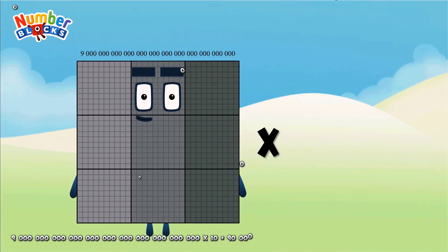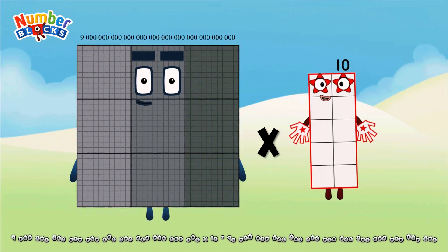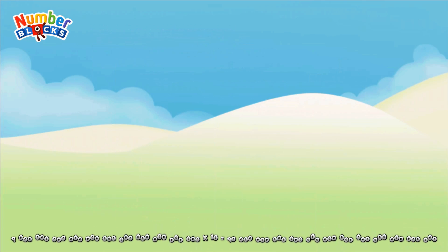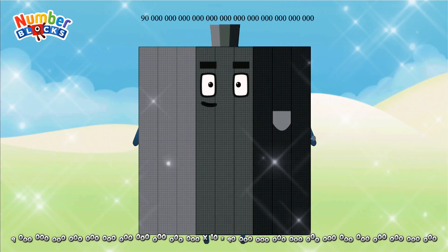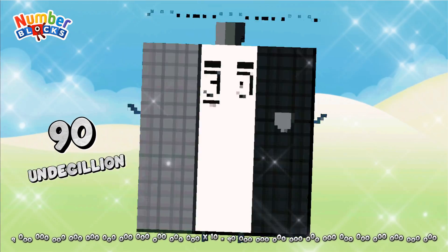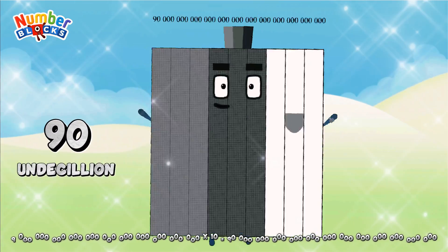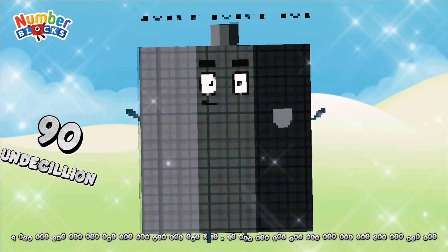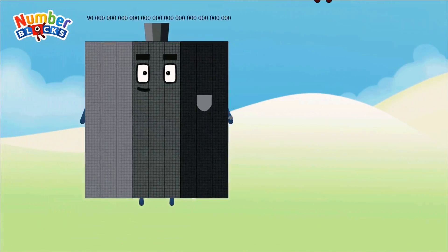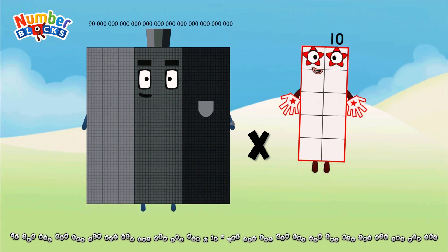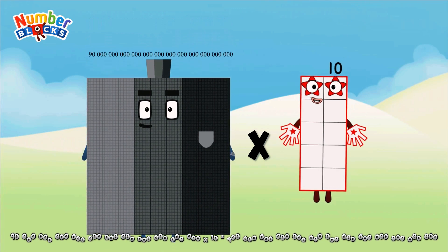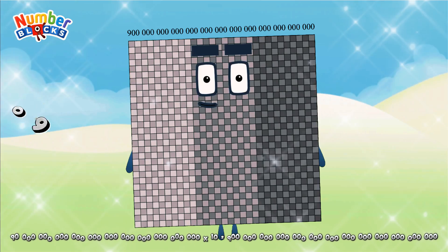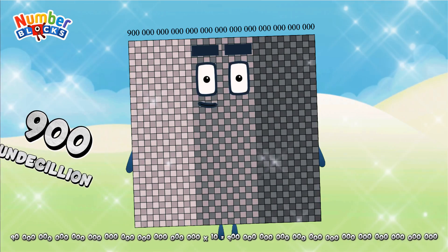9 decillion, multiplicated by 10, equals 90 undecillion. 90 undecillion, multiplicated by 10, equals 900 undecillion.